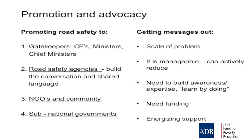Many of you have state, provincial, and local governments — that's another layer of road safety activity you have to foster and encourage. So much road safety delivery happens at the local level, even though the enabling work and ideas happen at the top. We've got to put effort into supporting that local delivery. We need to tell the story of the scale of the problem — tell them the number killed and injured every year. If every life affects a hundred people, that's a lot of people being affected in each of your countries every year.